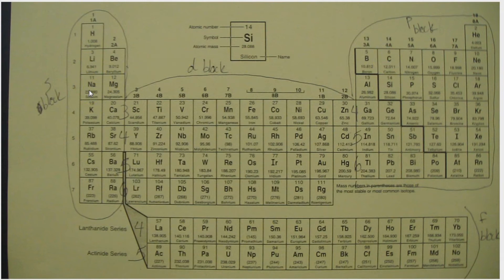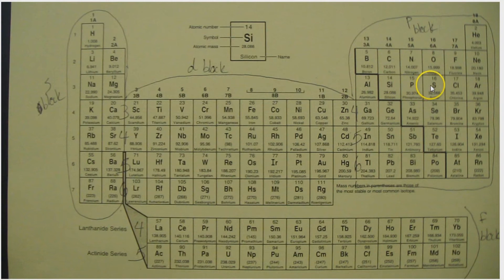Down to sodium: this is 3s1, then 3s2, over to aluminum which is 3p1, then 3p2, 3p3, 3p4, 3p5, 3p6.